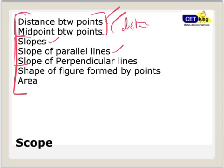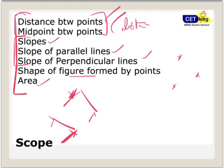Next is slope, so slopes of a line, slope of parallel lines, slope of perpendicular lines. The last two, where the complete complexity starts, is the shape of the figure. They'll give you a couple of points, a few points, and tell you what is this: is it a triangle, is it a circle, is it a straight line. Last is the area. I'll give you three or four points, find the area of the figure formed. It can be a quadrilateral, can be anything.